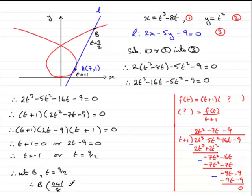And if you put 9 over 2 into here and square it, you'll find you get 81 over 4. So there you go. They're the coordinates of the point b.